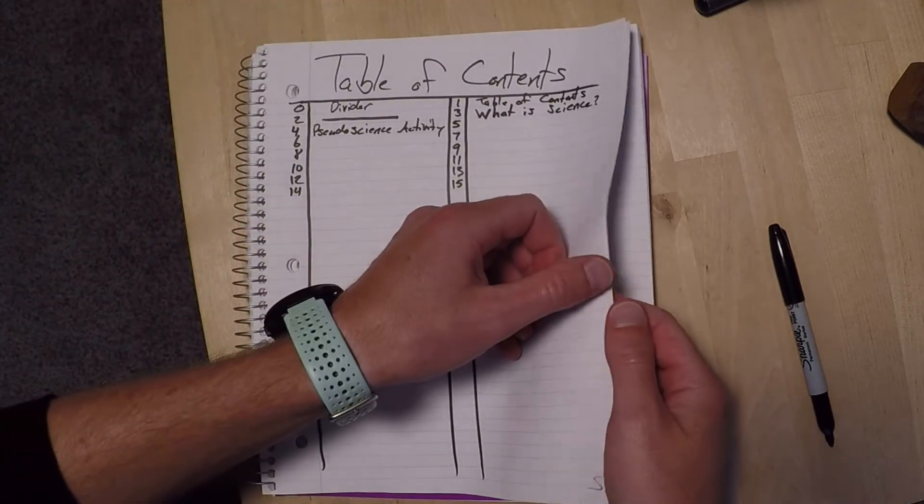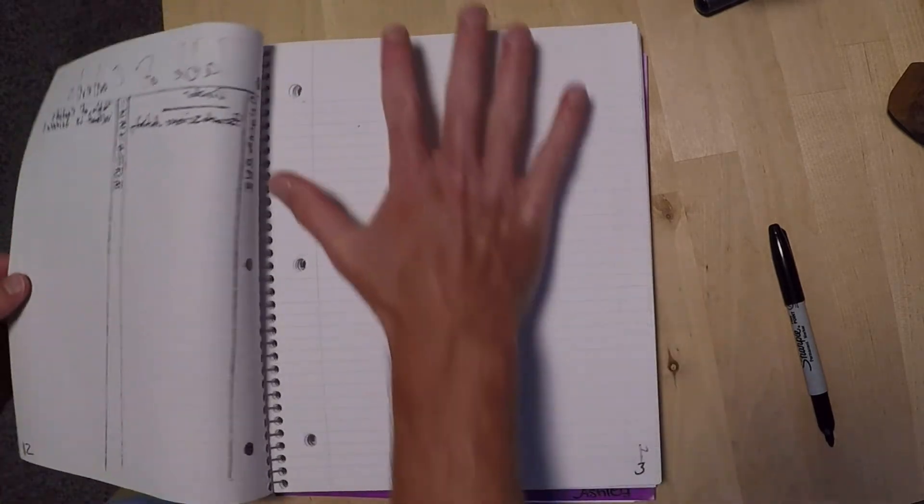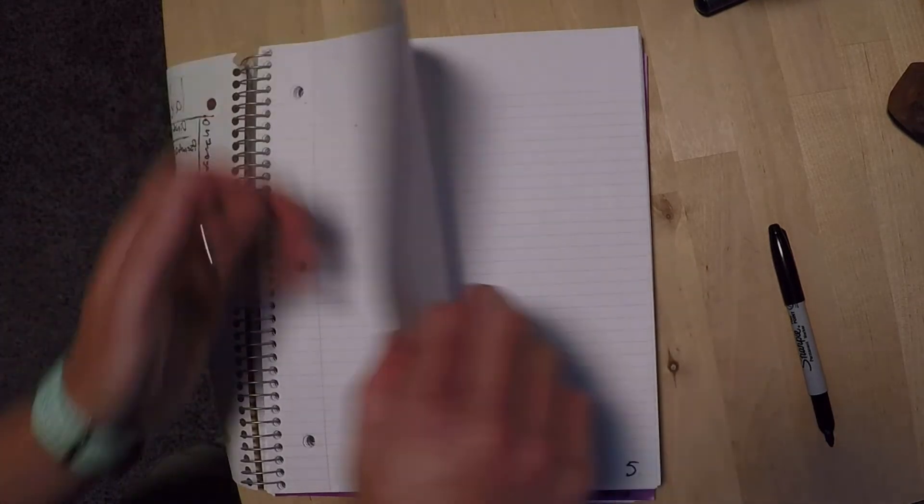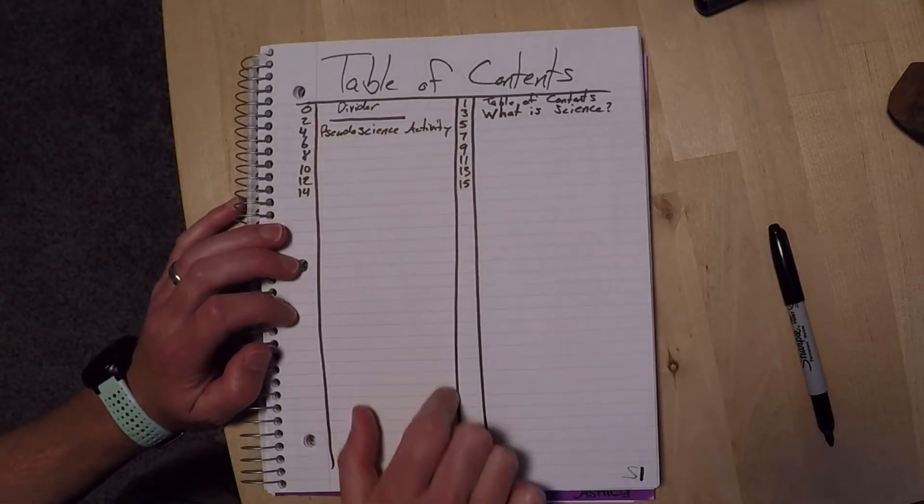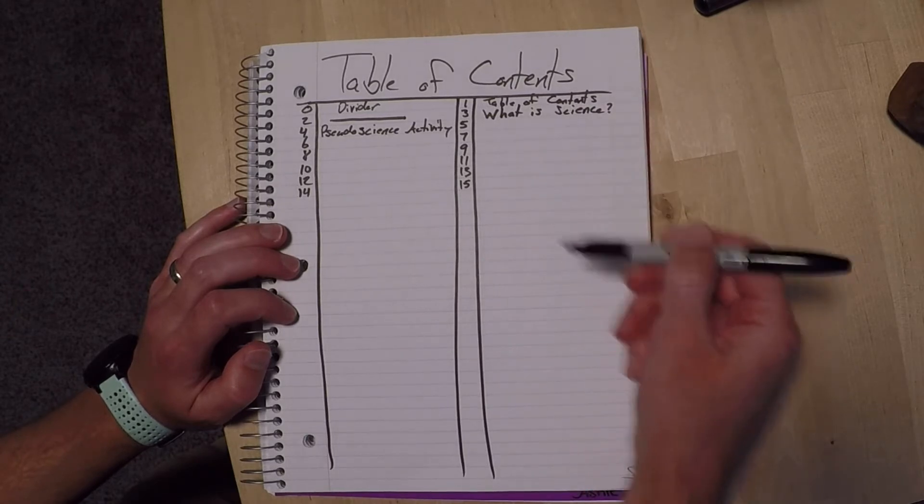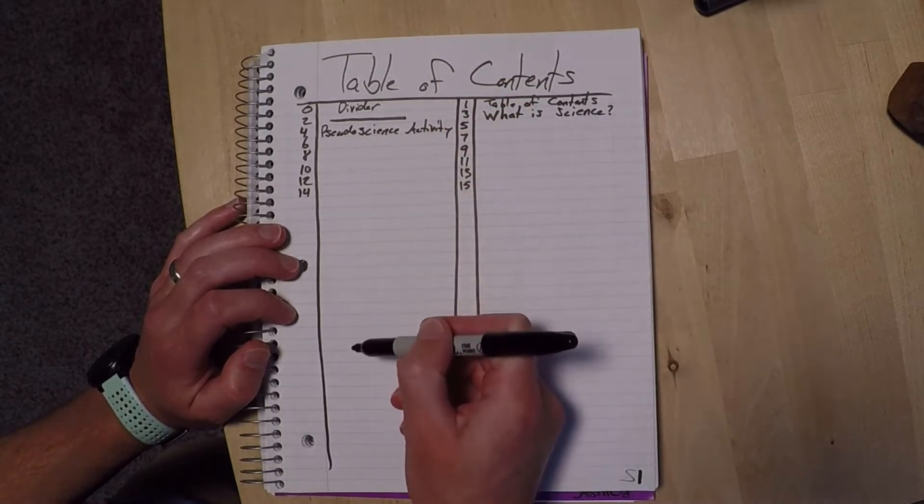So all of my notes are actually going to be on the right hand side. And all of my activities are going to be the left hand side. And that's how it is set up on our table of contents as well. So these will be all of our notes. And these will be all of our activities or labs that we do.